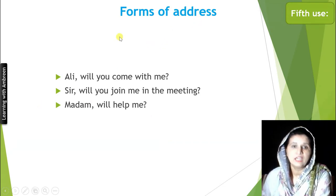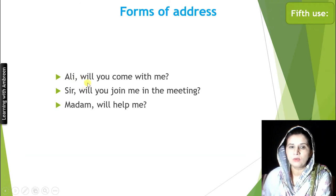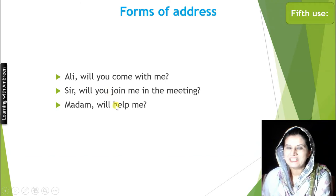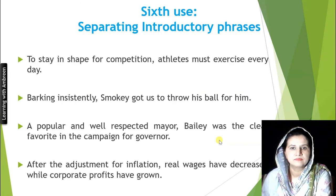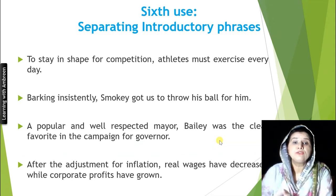Sixth use — separating forms of address: Whenever you address someone by name or title, always separate it through a comma. For example: 'Ali, will you come with me?' / 'Sir, will you join me in the meeting?' / 'Madam, will you help me?'